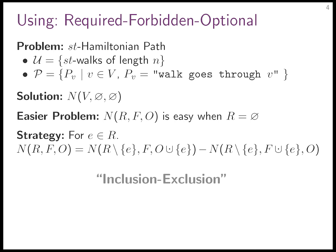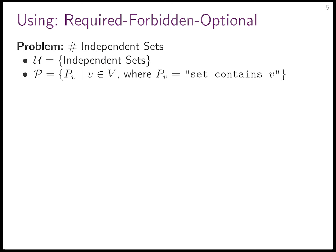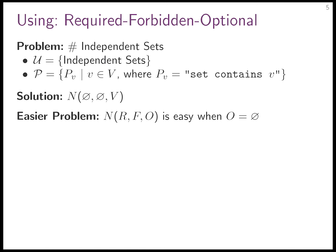Let's look at our old friend independent sets and do a similar scheme. Problem: counting independent sets. Universe: independent sets. Properties: for every vertex, does the set contain this vertex? This looks silly as a formulation, but bear with me. What we want is N(∅, ∅, V) — none of these vertices are required, none are forbidden, all are optional. That's precisely the problem: we don't know which vertices are in the independent set. They are all optional. This is the NP-hard problem.